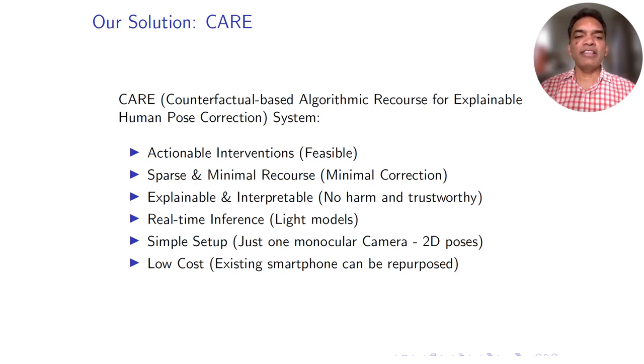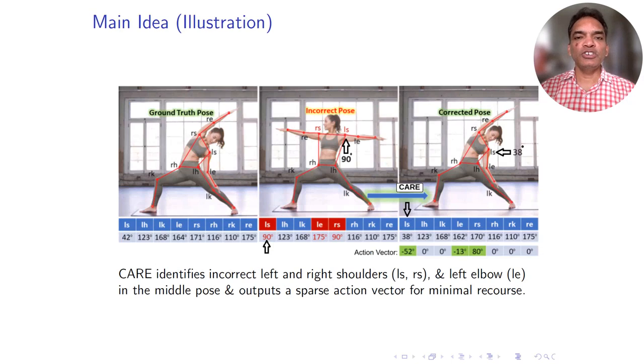We not only find the goodness of a given pose but also recommend actionable interventions using algorithmic recourse. The main idea, in a nutshell, is we perturb the given pose. In this case, this is the reverse warrior pose. We perturbed the left shoulder joint as well as the right shoulder joint as shown in this incorrect pose, and our CARE system correctly comes up with action vectors to correct this incorrect pose.